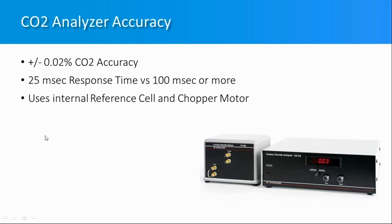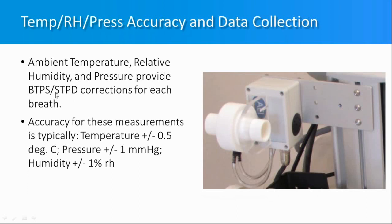For the rest of the system, the same high tolerances apply to all parameters used to correct flow and the gas sample in terms of STPD. The pneumotach measures flow, and the compensating electronics box contains all the sensors — temperature, relative humidity, and pressure — built in.